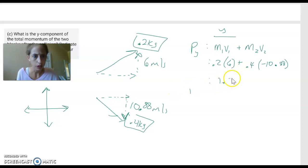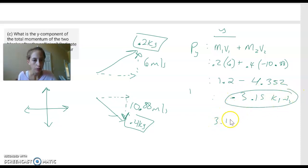Okay. So 1.2 minus, no times. So this is 4.2. So this is not being a negative number. Negative 3.15 kilogram meters per second. Or you can say 3.15 kilogram meters per second down or south. Okay. Down or south or negative.